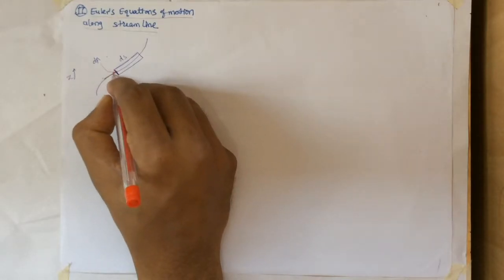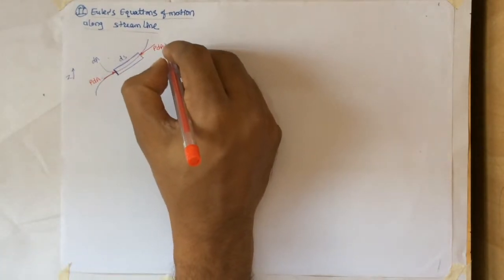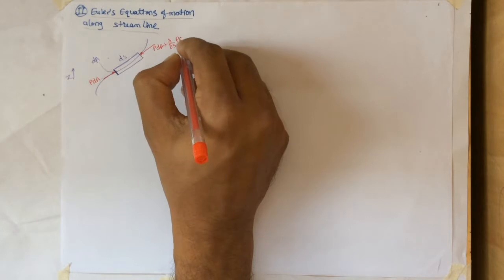So the force acting on one side of the element is pdA. So on the other side, we have some change in that. So pdA plus d/ds of pdA times ds.